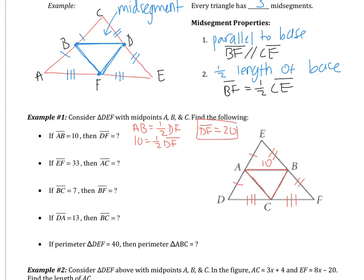Now if I know that EF is 33, how am I going to find AC? Well again, I know AC is going to be half of the base, half of EF.